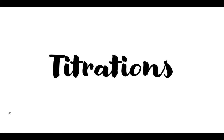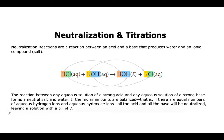In this video we're going to learn about what a titration is. It is a process that we use to determine the concentration of an unknown substance. Titration is a method that involves neutralization reactions. If you remember from when we learned about acids and bases, a neutralization reaction is a reaction between an acid and a base that produces water and an ionic salt.